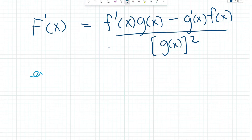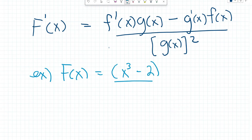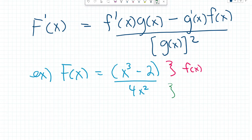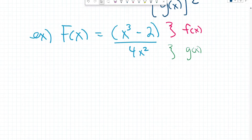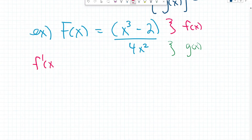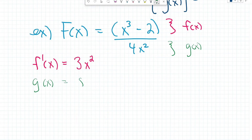Let's look at an example. Say our function large F of x equals x to the power of 3 minus 2, all divided by 4x squared. We identify the numerator function as our small f of x and the denominator as our g of x. Let's do the same thing we did for product rule and find the derivatives of f of x and g of x on the side. Using the power rule: f prime of x equals 3x squared, and g prime of x equals 8x.